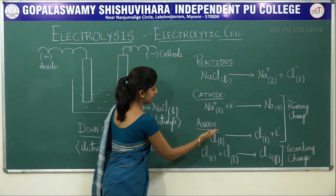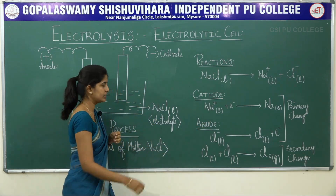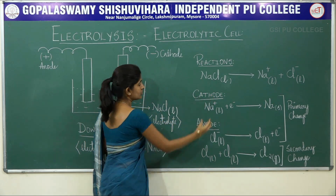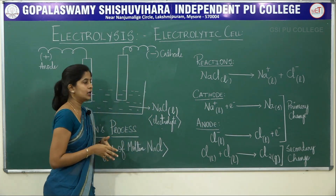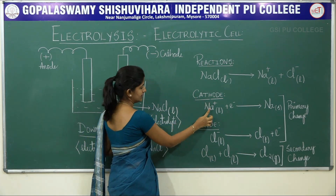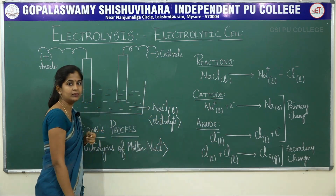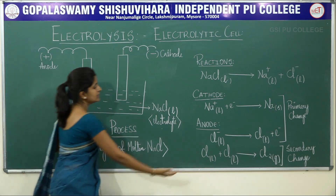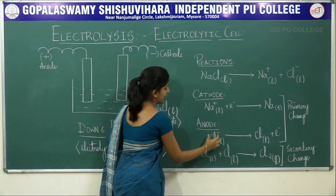When current passes through the electrolytic cell, the respective ions move towards their respective electrodes. The cation — that is the Na⁺ ion, which is positively charged — moves towards the cathode, which is negatively charged, since opposite charges attract. The anions, which are negatively charged Cl⁻ ions, move towards the anode, which is positively charged.